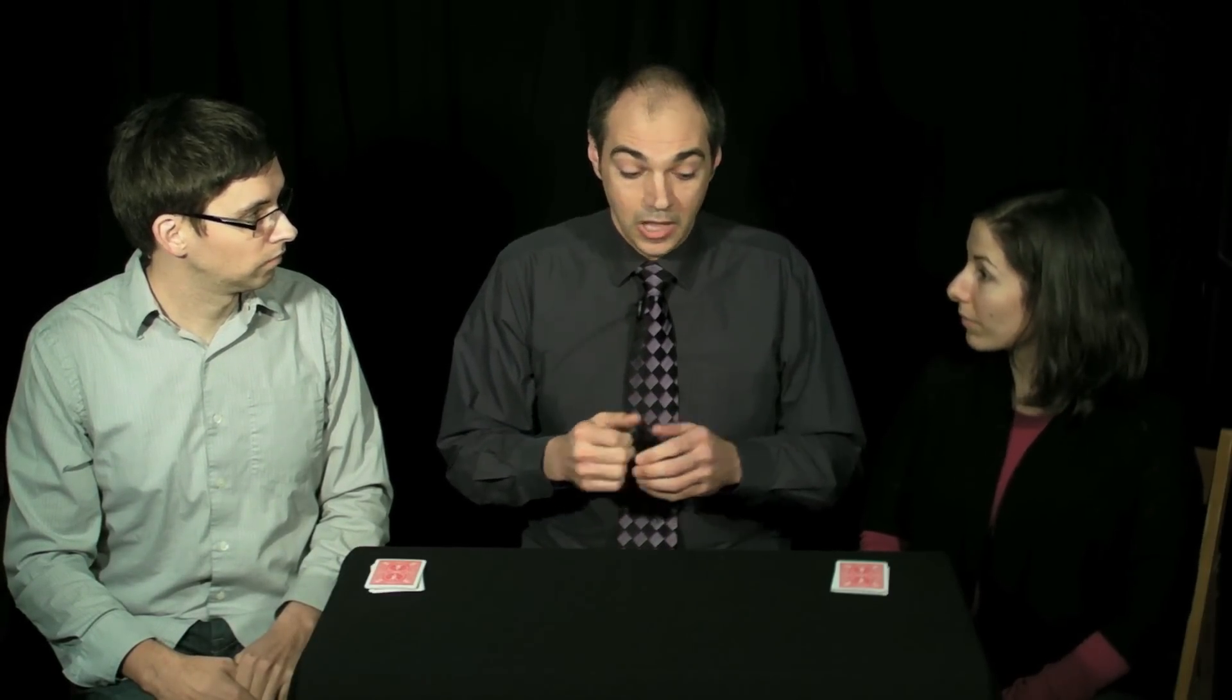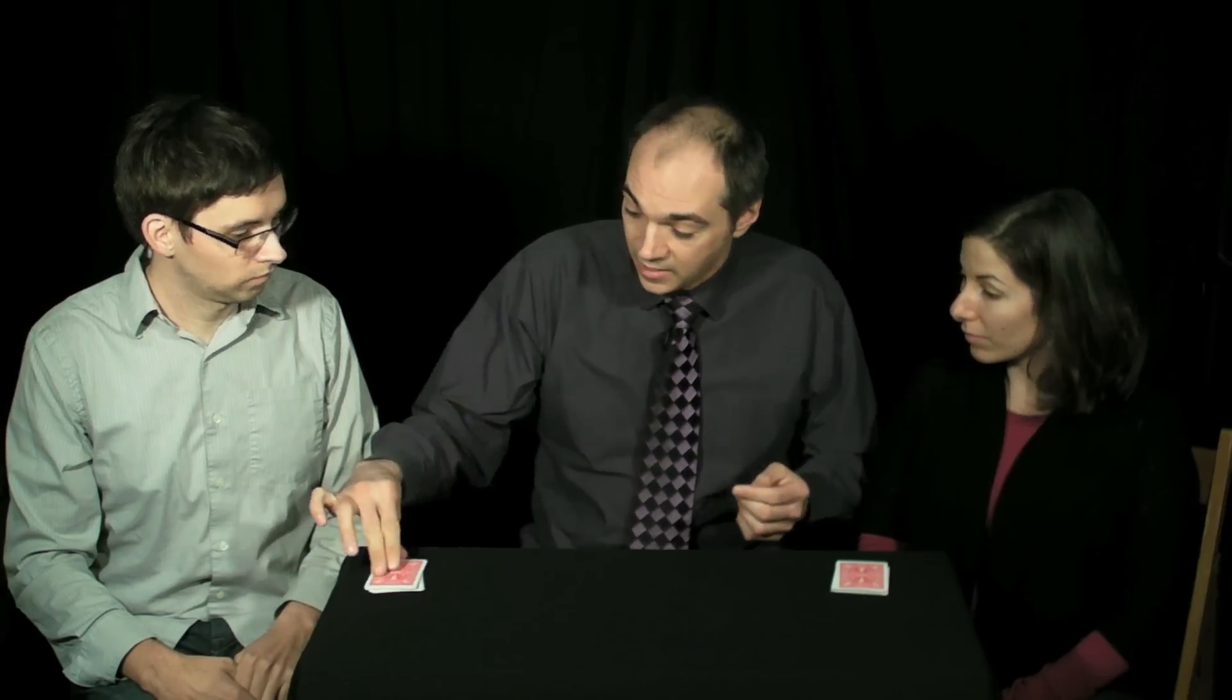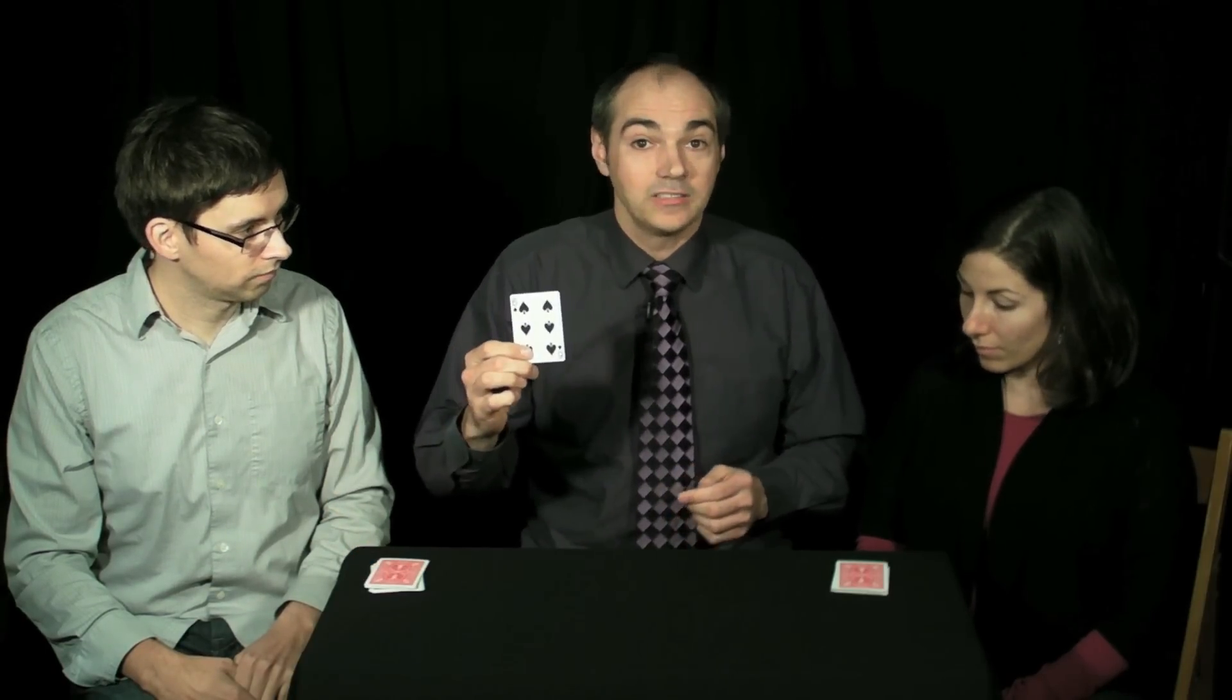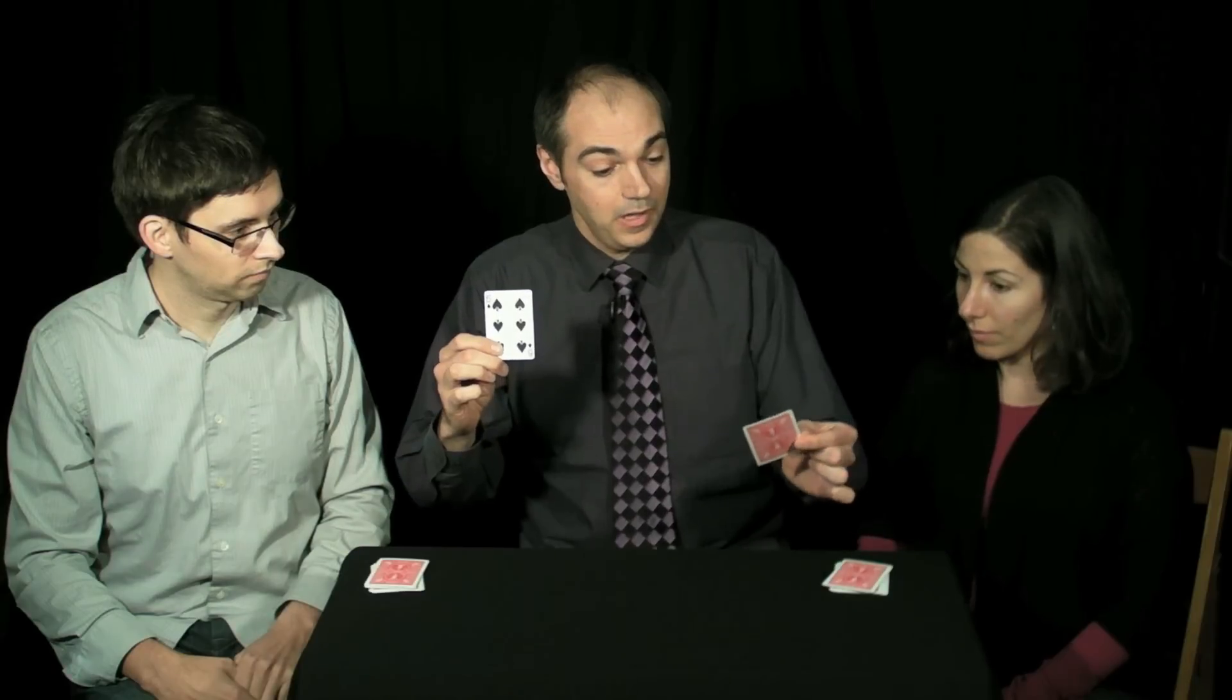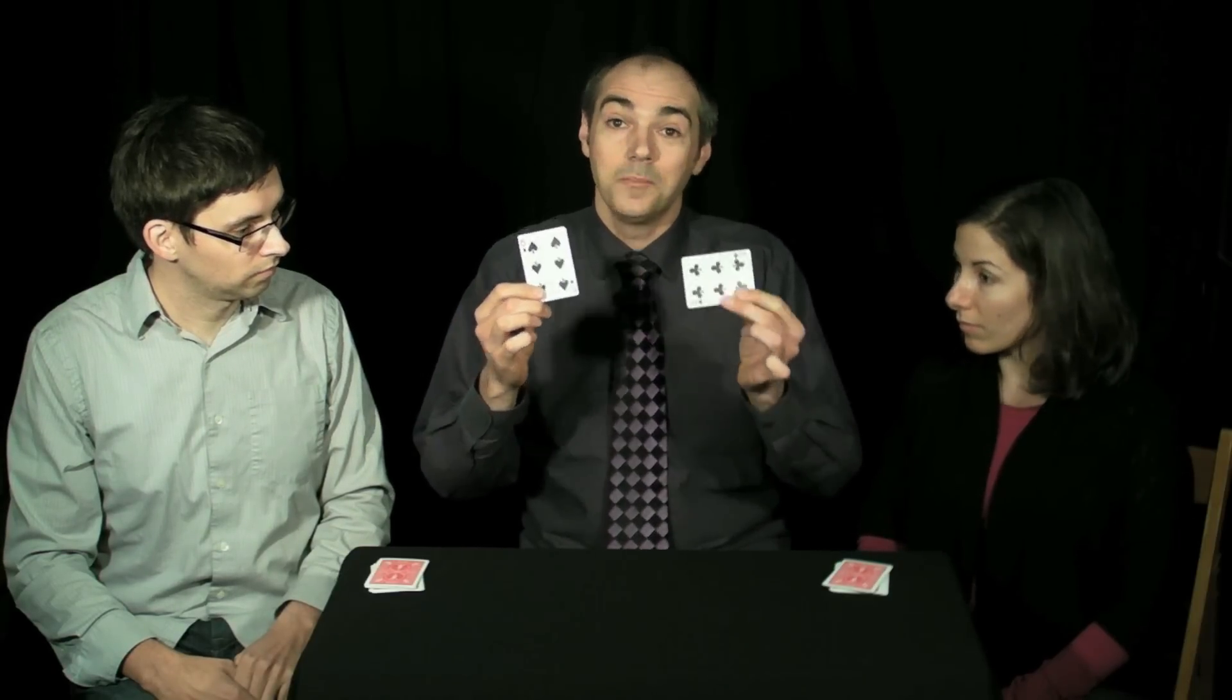You would think that because of those independent choices and shuffling procedures, that they would have random orders. When in fact, if we look at the top card of Krister's pile, it's a black six. The top card of Jamie's pile is also a black six.